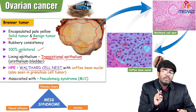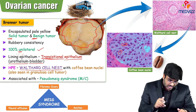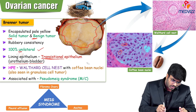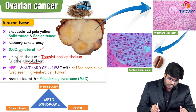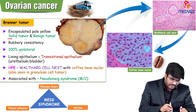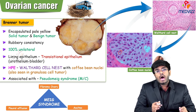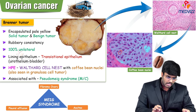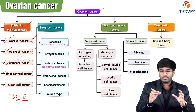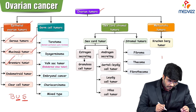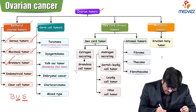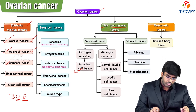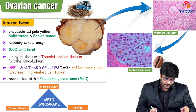Coffee bean nuclei are also seen with granulosa cell tumors — which are not epithelial tumors but sex cord stromal tumors. So coffee bean nuclei appear in both Brenner's tumor and granulosa cell tumor.